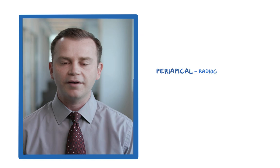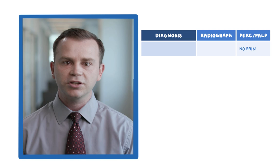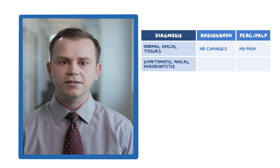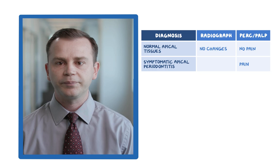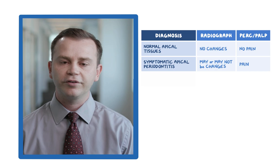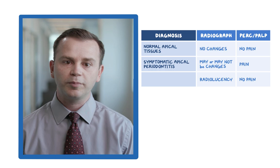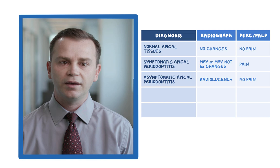The periapical diagnosis is confirmed by a combination of radiographs and tests. Teeth that have no pain to percussion or palpation around the apex, and with no apparent radiographic changes of the periradicular bone, are said to have normal apical tissues. Symptomatic apical periodontitis is determined when the patient experiences pain to percussion, palpation, or biting. In these cases, there may or may not be radiolucent changes on the radiograph. When there are radiolucent areas surrounding the apex of the root but no pain with periapical tests, the diagnosis is asymptomatic apical periodontitis.